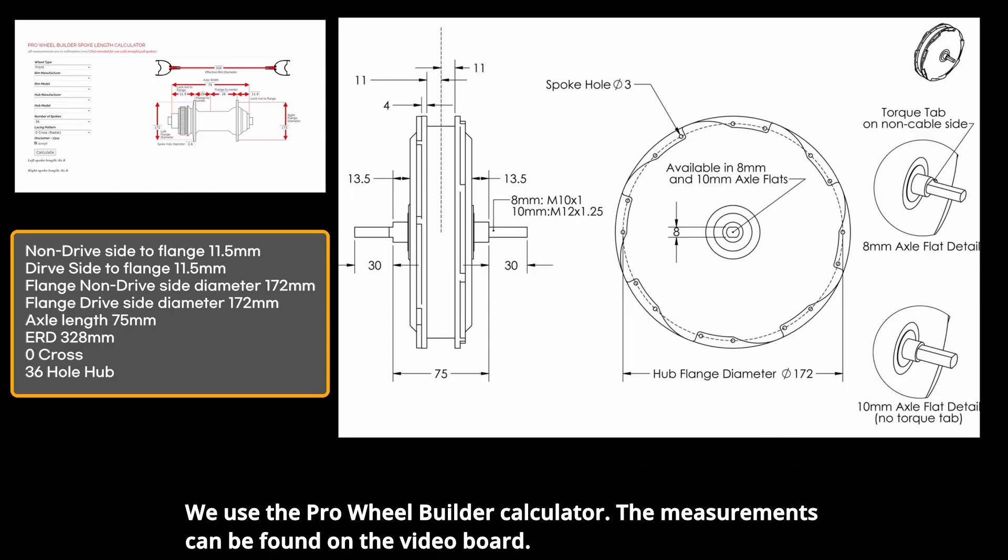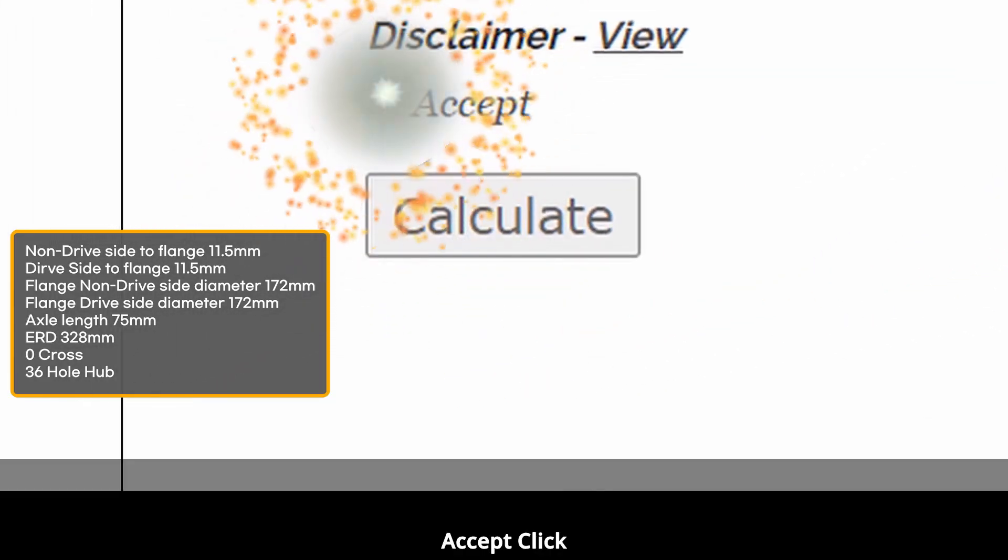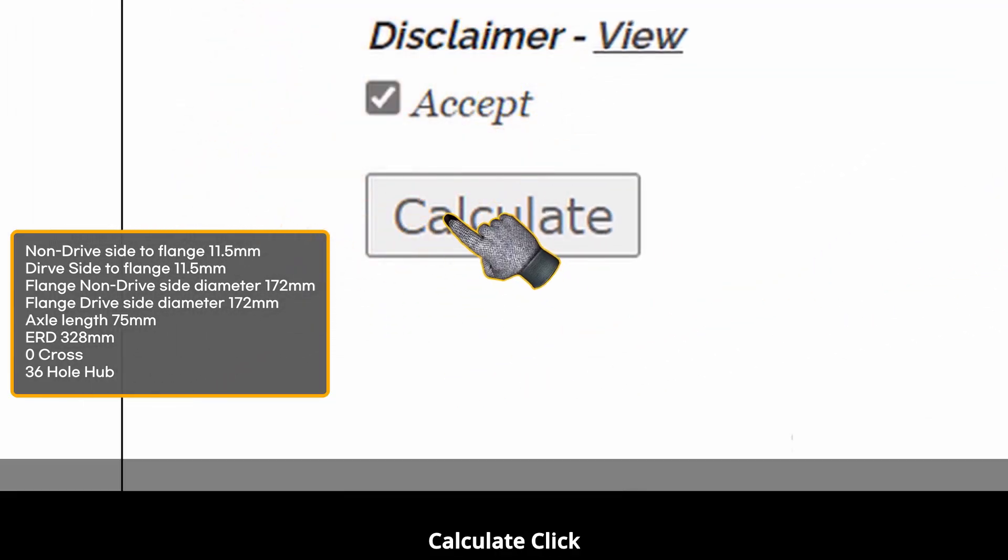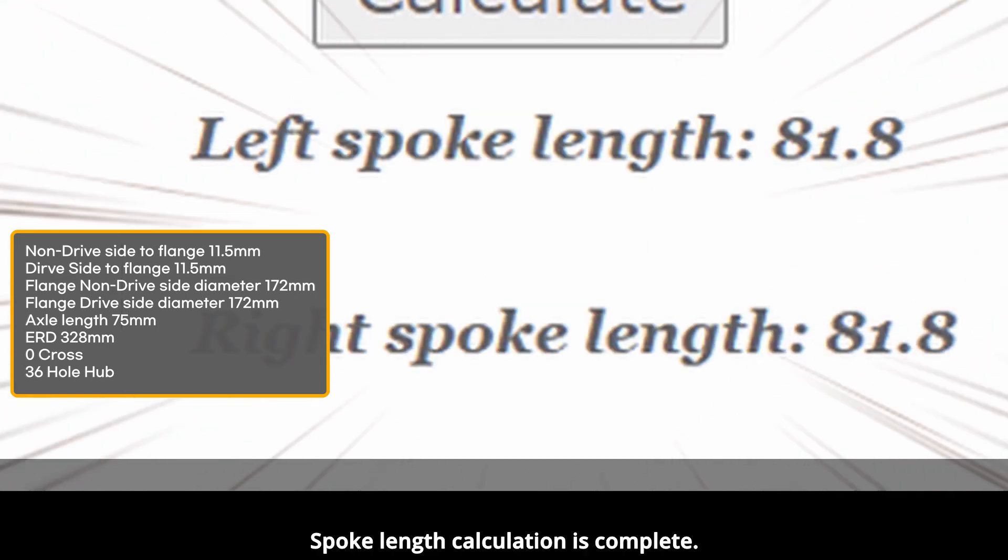We use the Pro Wheel Builder calculator. The measurements can be found on the video board. Accept click. Calculate click. Spoke length calculation is complete.